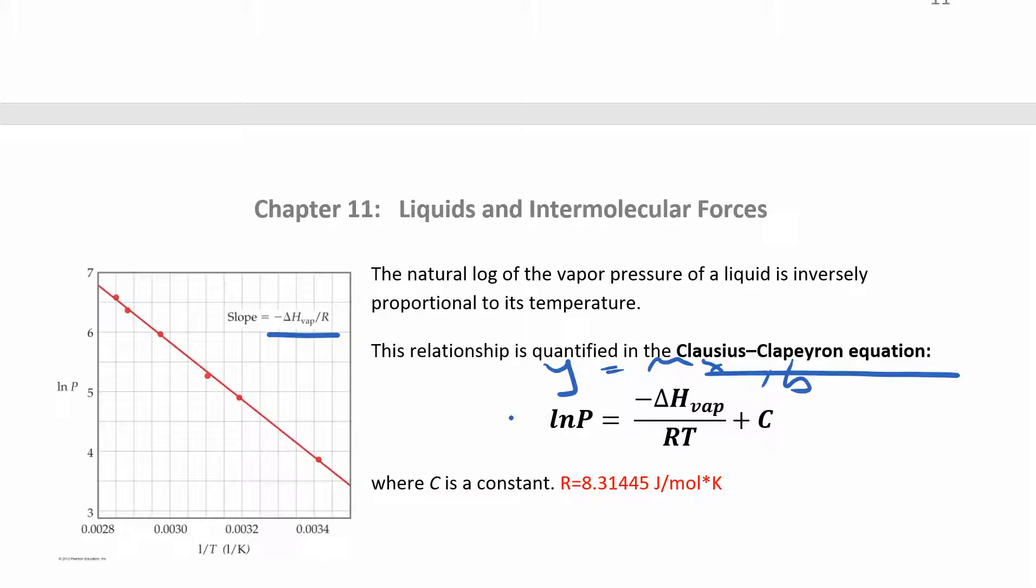So this is one way that you can calculate the delta H. And the constant there that we're using, since delta H is usually in joules or kilojoules, the R that we're going to use to do this is the 8.3145, that one right there, joules per mole Kelvin. So again, this is the same R that we used in chapter 10, just different units.